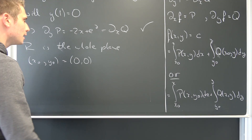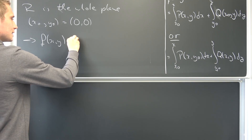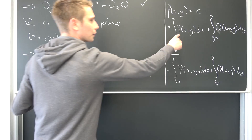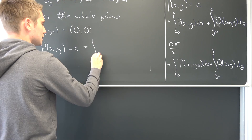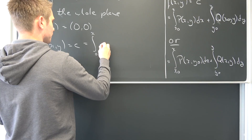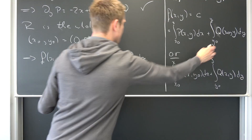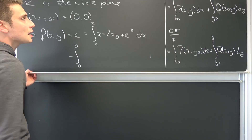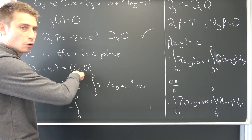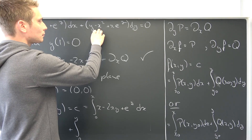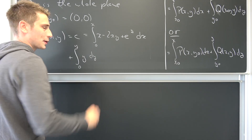We can just plug those in. It really doesn't matter which formula you choose — let us just go for this one. Our f(x, y) is nothing but our one-parameter solution family, and this is nothing but this formula right here with x-naught and y-naught plugged in respectively. So we are going to get an integral from 0 to x of P — which is nothing but x minus 2xy plus e to the y — dx, and then we are going to add an integral from 0 to y of Q(x-naught, y). Since x-naught is nothing but 0, everywhere x appears we plug in 0. This all vanishes and we are just going to be left with y, integrated with respect to y.